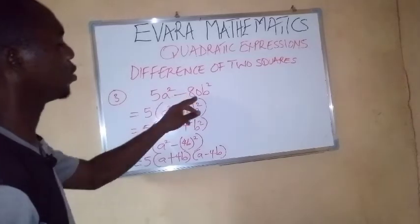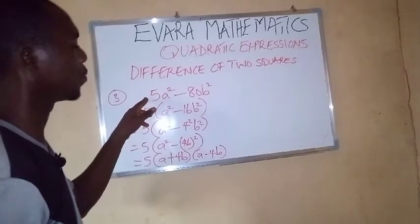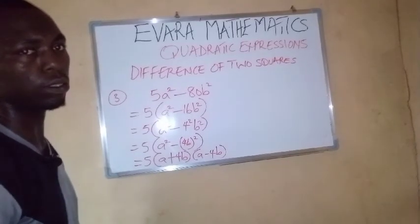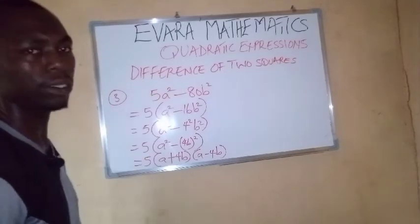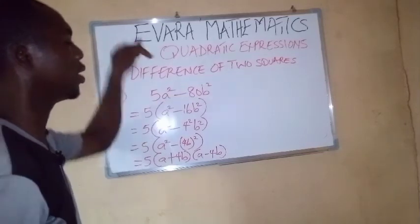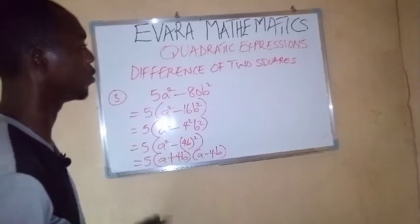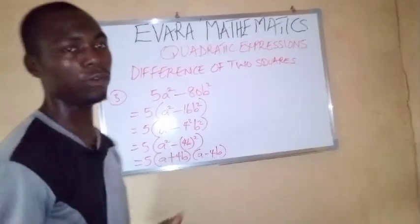So whenever you are given two numbers that are not perfect squares and you have to apply the rule of difference of two squares, you simply look for what number you can use to divide both of them so that the results will be perfect squares. Thank you. Don't forget to subscribe.